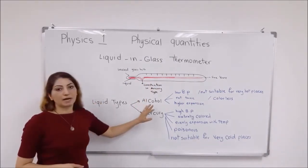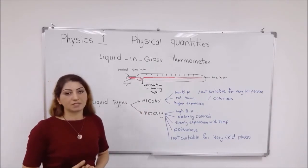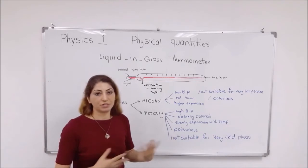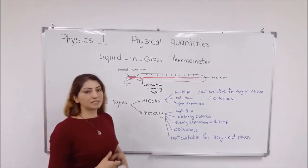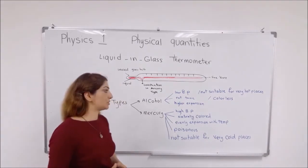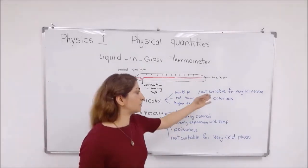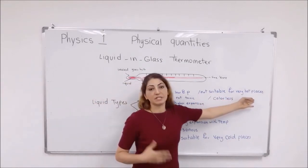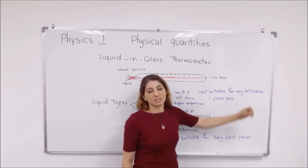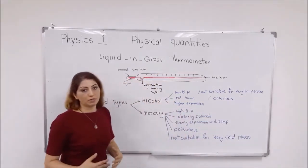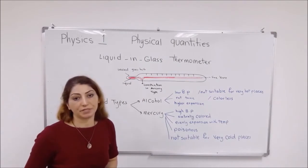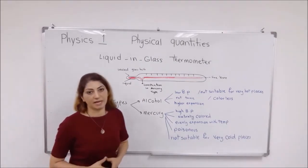The liquid types are alcohol and mercury. There are some advantages or disadvantages for each. Alcohol has properties such as a very low boiling point, so it's not very suitable to be used at very hot places. The reason is that it starts boiling before it reaches 100 Celsius. The boiling point of alcohol is very low, lower than the boiling point of water, usually around 78 Celsius.